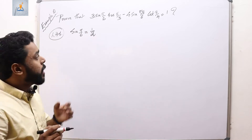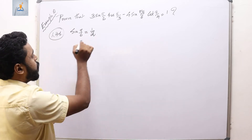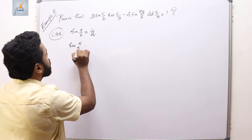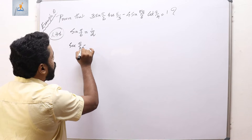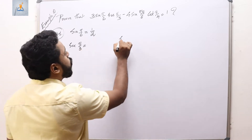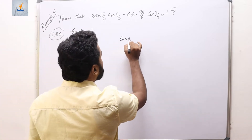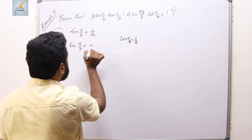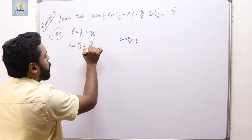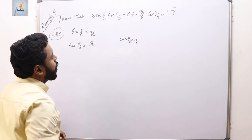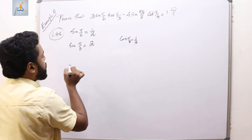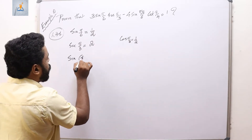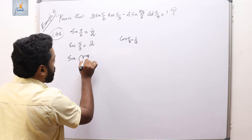Next, cos(π/3) = 1/2, so sec(π/3), the reciprocal, equals 2. Next we have sin(5π/6).